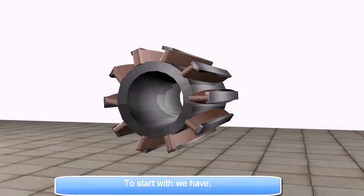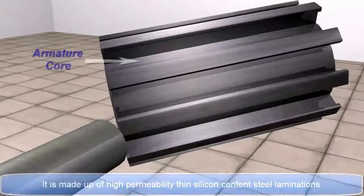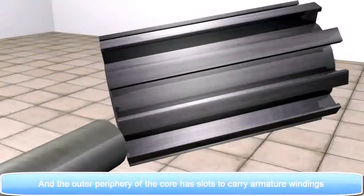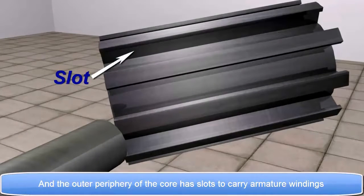To start with, we have Armature Core: It is made up of high-permeability thin silicon-content steel laminations. And the outer periphery of the core has slots to carry armature windings.